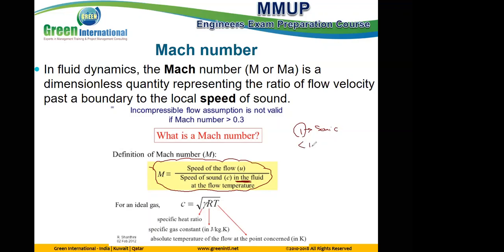If it is less than 1, it's called subsonic. If it is more than 1, it's called supersonic. Sometimes if it is more than 3 or 4, it's called hypersonic. Any such number is actually a dimensionless quantity — Reynolds number, Mach number, and so on.